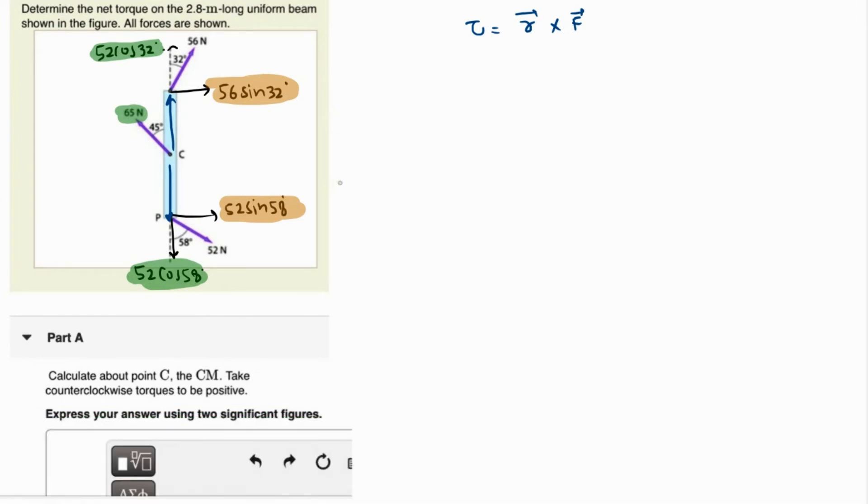Let's try to find out the torque which is provided by this point. Let's call it tau 1. So that will be 52 sine of 58 times the distance between them. This is 2.8 meters long, so midpoint is C, which is 1.4, as in 2.8 over 2.